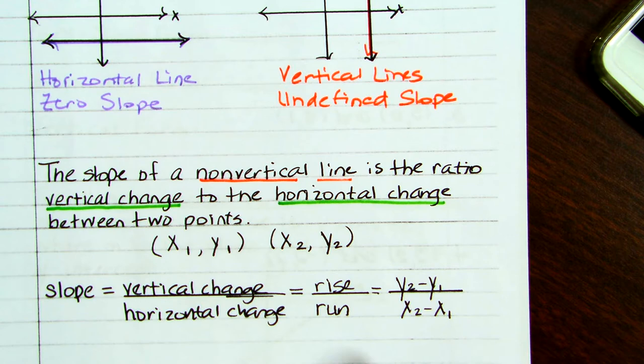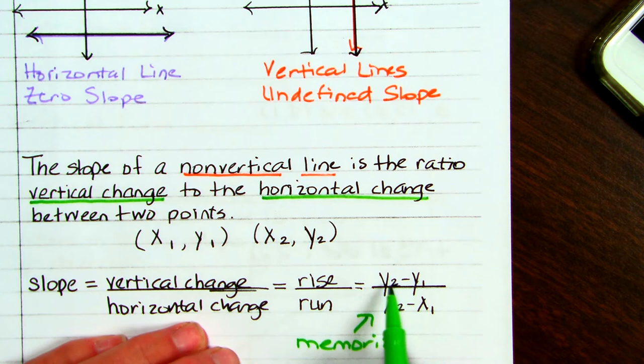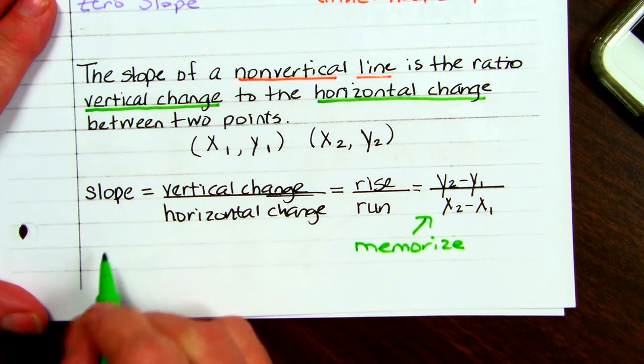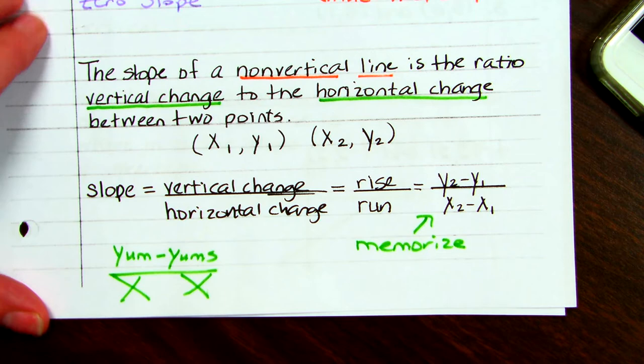You need to have this slope formula memorized. You can think of it as the yum-yums on top of the picnic table — the y's on top — and the legs of the picnic table would be the x's. Just a silly way to help you remember.